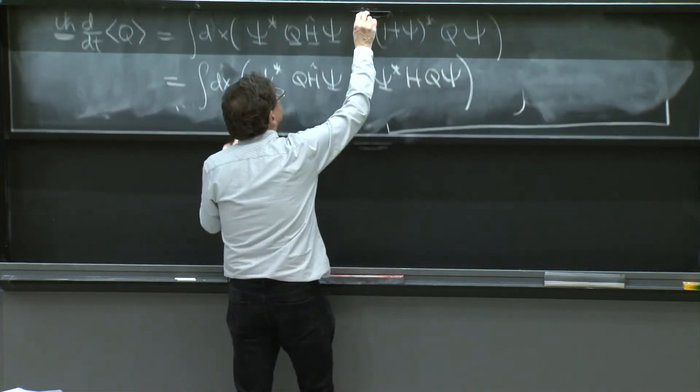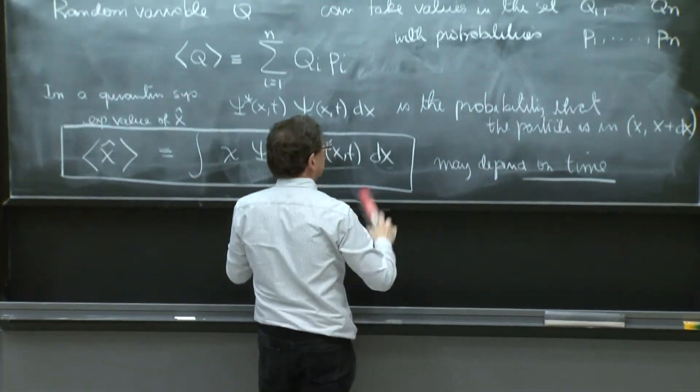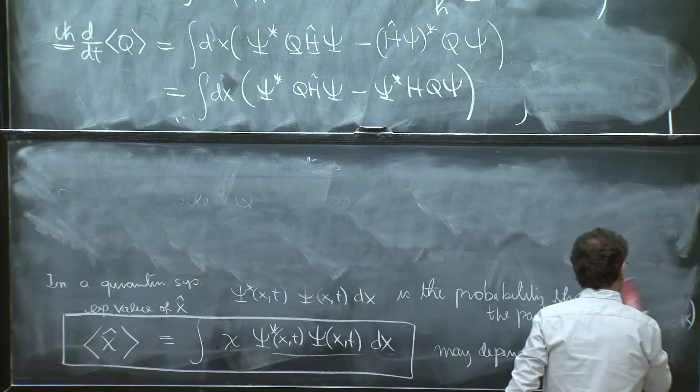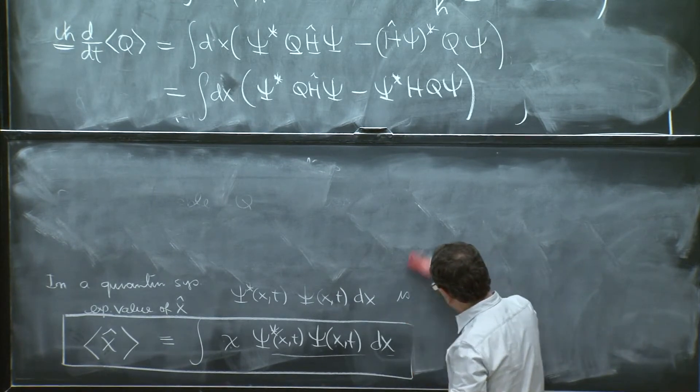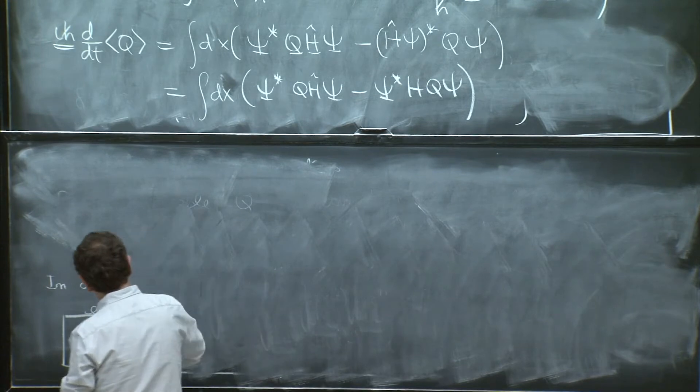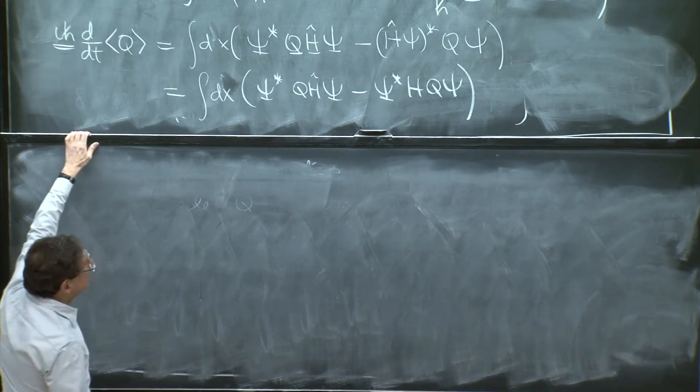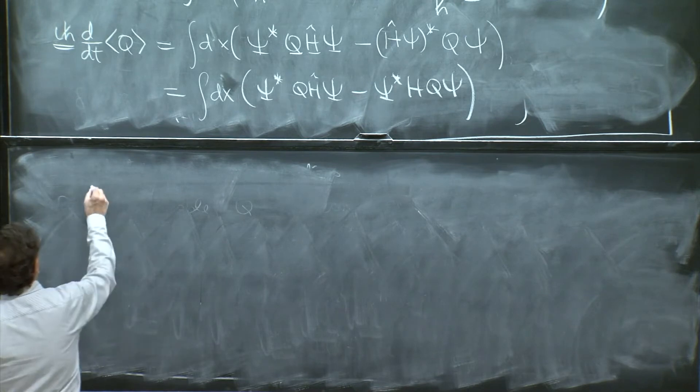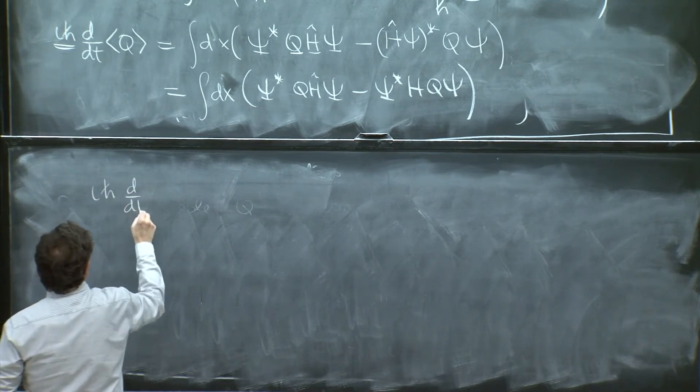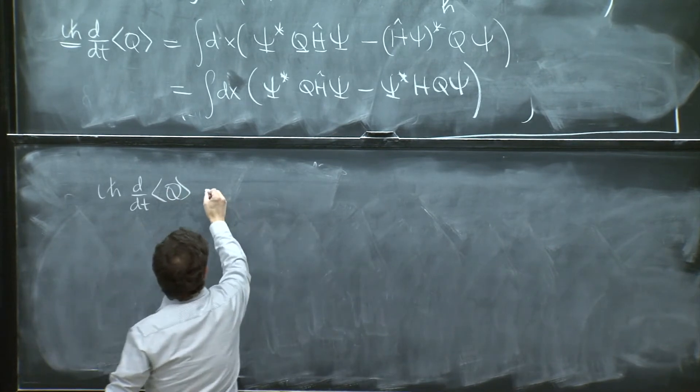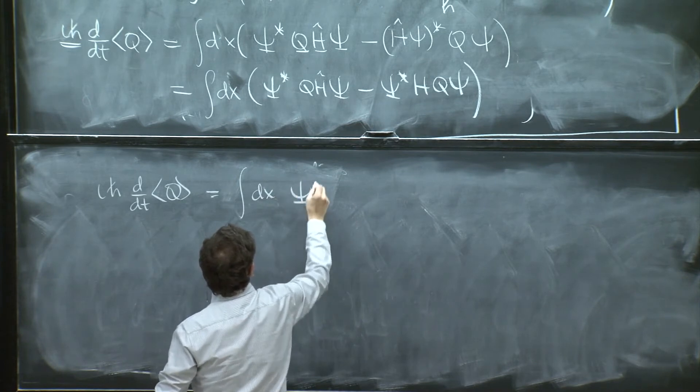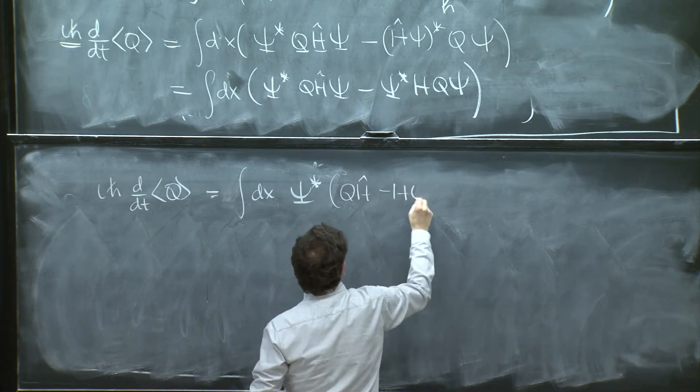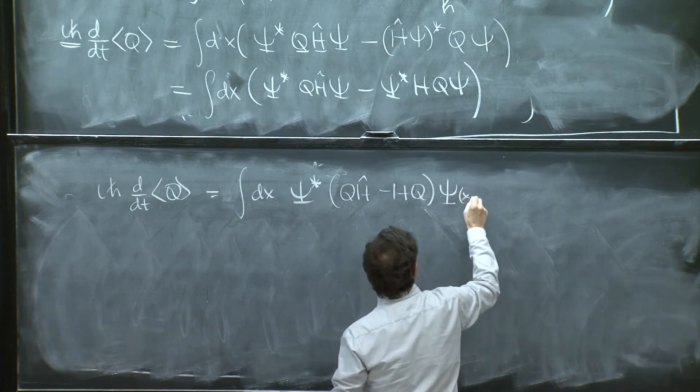But then, what do we see there? We recognize a commutator. These commutators, just like we did for x and p, and we started practicing how to compute them, they show up here. And this is maybe one of the reasons commutators are so important in quantum mechanics. So what do we have here? i h bar d dt of the expectation value of q is equal to the integral dx of psi star q h minus h q psi. And this is all of x and t.